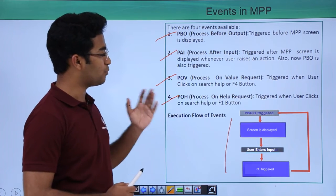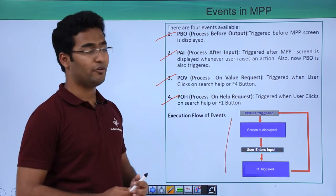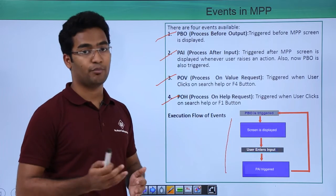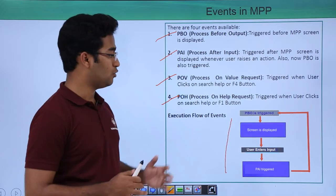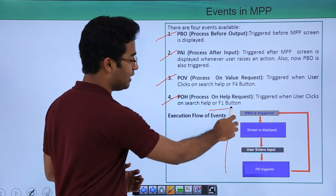Then we also have POV that is process on value request. It is triggered whenever the user clicks on F4 button that is the search help button. Then we have POH that is process on help. It is triggered whenever the user is clicking F1 button.